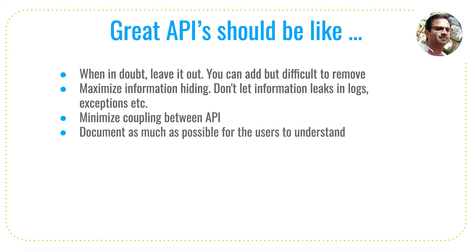The next one is: document as much as possible for users to understand. Whenever you write an API it should be self-explanatory. If somebody reads the API, they should be able to understand what it is for, how it is meant to be used, and how it can be utilized. You have to document in such a way that even someone who doesn't fully understand software applications can understand the API and make use of it.